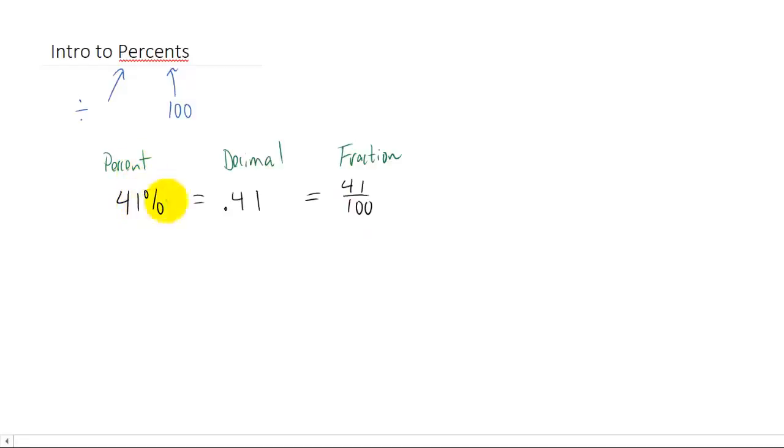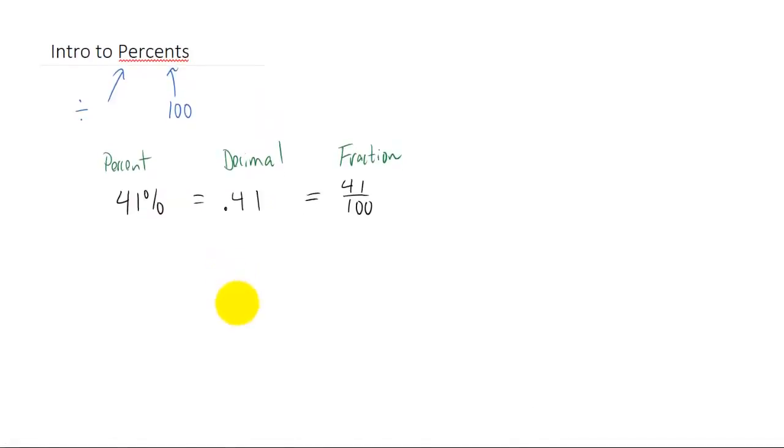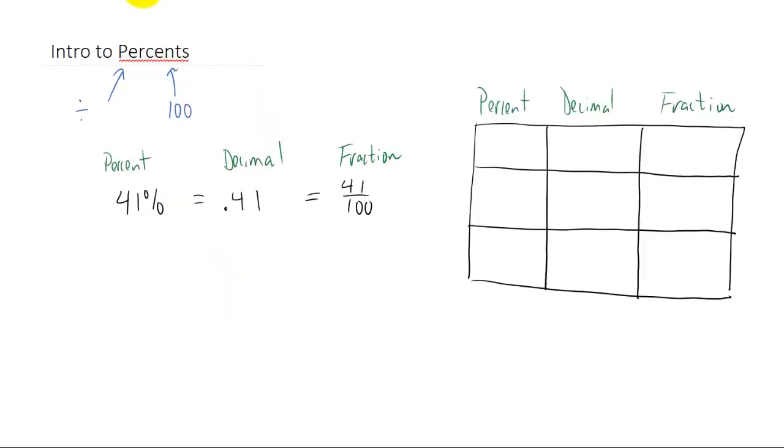Likewise, any fraction can be written as a decimal or percent, or any decimal can be written as a percent or a fraction. We can make this chart here, and I could give you a number in the chart, say 41%, and ask you to write that number in the other two forms. In this case, we just did that. We wrote 41% as 0.41, and also as 41/100.